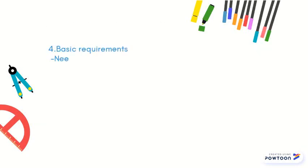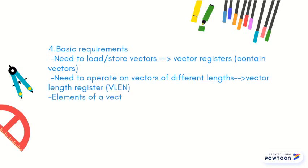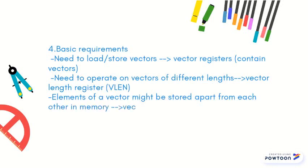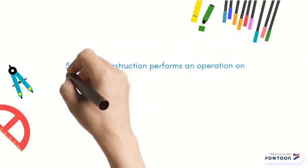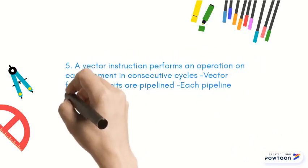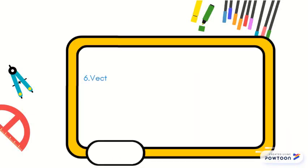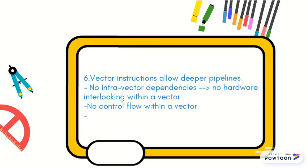The basic requirements for vector processors are: it needs to load or store vectors; it needs to operate on vectors of different lengths; elements of a vector might be stored apart from each other in memory. A vector instruction performs an operation on each element in consecutive cycles. Vector functional units are pipelined. Each pipeline stage operates on different data. Vector instructions allow deeper pipelines, with no intra-vector dependencies, no hardware interlocking within a vector, and no control flow within a vector. This also allows prefetching of vectors into cache memory.